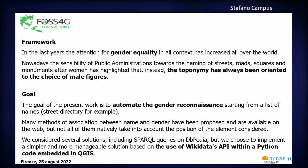The goal of our work is to automate gender recognition starting from a list of names, for example a street directory. There are already many available methods of association between name and gender, but not all actively take into account the position of the element considered. We considered several solutions and finally chose to implement a simple, manageable solution based on the use of Wikidata's API within a Python code embedded in QGIS.